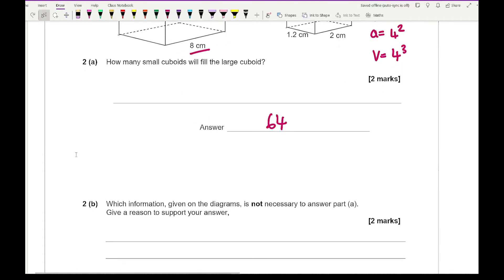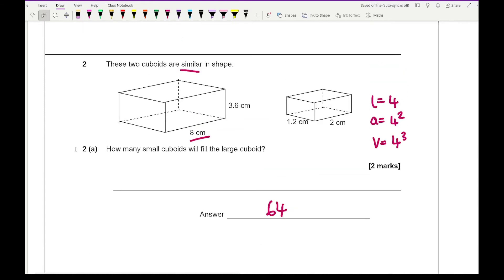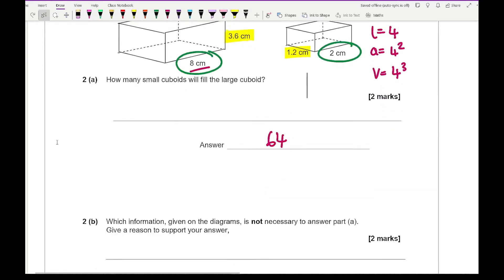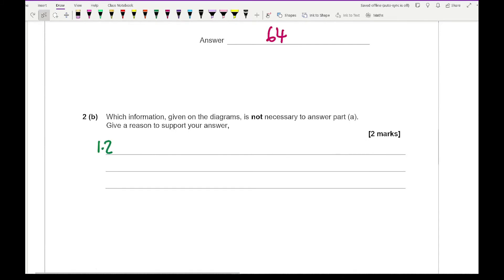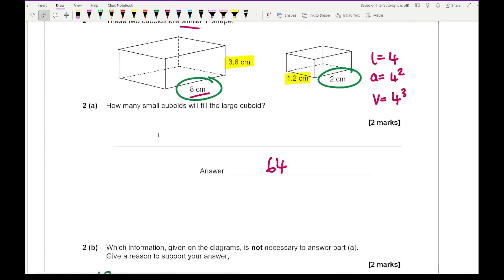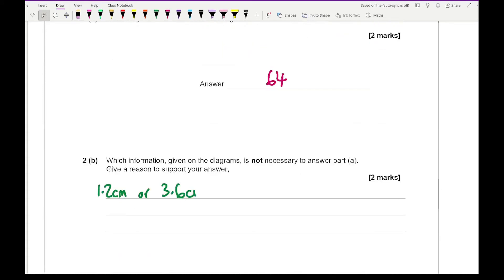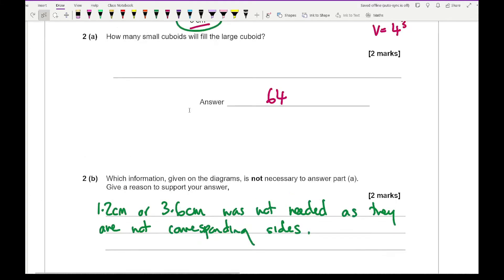The alternative is to see how many of those actually fit in and you go from there. Now the next part says which information given on the diagrams is not necessary to your answer in part A. Give your reason to support your answer. In terms of this, which length have I not used? Well I've not used the 3.6 or the 1.2, because what I need is two corresponding sides. So I just needed 8 and 2 to be able to work out what the length scale factor is. So here, either 1.2 centimeters or 3.6 was not needed as they are not corresponding sides.